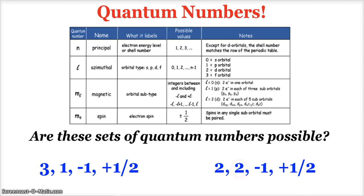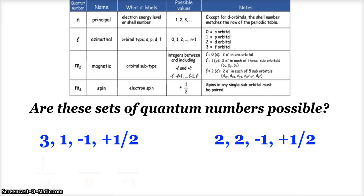Here are some questions. These used to be more common on the old versions of the AP exam, but I still think they're relevant. Quantum numbers are still used and talked about in general chemistry. It says here, are these sets of quantum numbers possible? We can look at this possible value column and try and see some patterns.